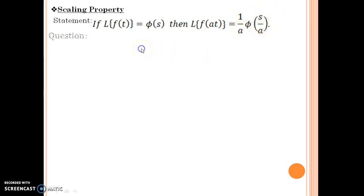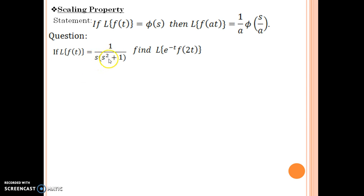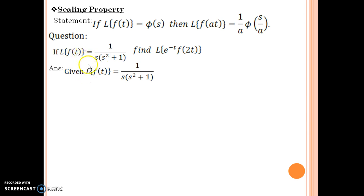Let us see a question on how to solve this. If Laplace of f(t) is equal to 1 upon s times (s squared plus 1), then we are expected to find a related Laplace. Whenever we start, we use the given information. The first question that comes to mind is which property to use, because f(2t) is available. One suggestion is to simplify the function if possible, otherwise start with the rightmost function — though there is no strict rule, it is preferred.